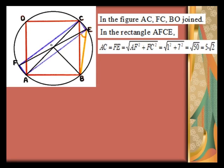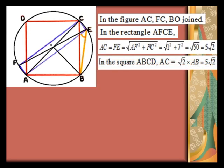Diagonal AC equals FE equals 5 root 2. In the square ABCD, AC equals root 2 times side, so root 2 times AB equals 5 root 2.